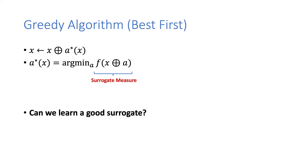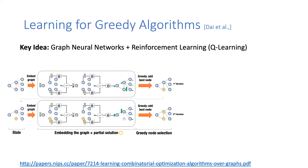There are basically two things that go into learning a good surrogate for a greedy algorithm. The first is: what is your function class used to estimate a good surrogate F? The second is: what is your training data? Let me talk about the function class first in the context of a particular paper.